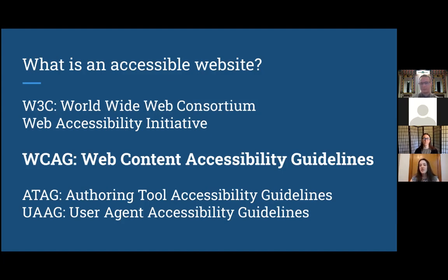The W3C — the World Wide Web Consortium — is an international organization that sets forth protocols and standards about the web. They have the Web Accessibility Initiative, an international working group that has set forth guidelines and standards for website accessibility. Features that make a website accessible include: text that can be read by a screen reader, font standards, text size, color contrast — what color contrast is easier to read — and many other things set forth in the Web Accessibility Initiative guidelines.